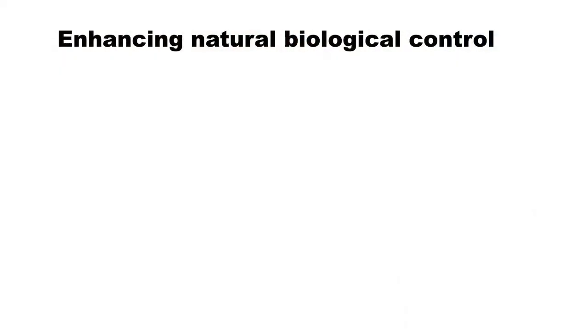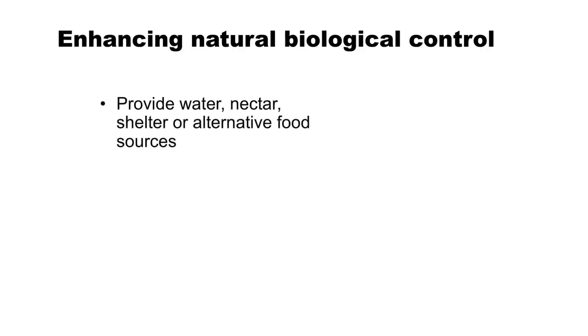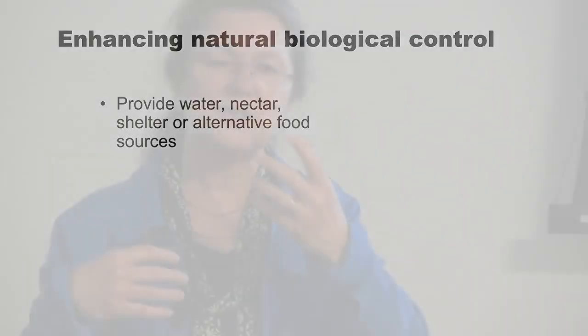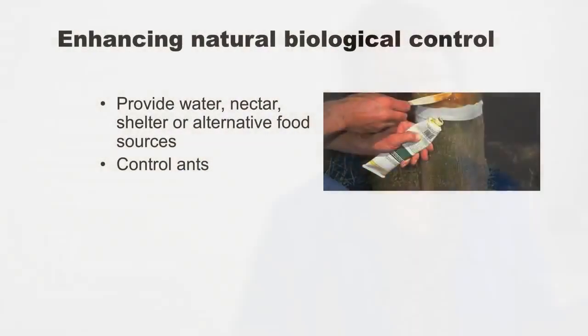In terms of what you do in your garden, you're going to be focusing on enhancing natural biological control. One of the ways of doing that is providing water, nectar, shelter, and alternative food sources. These little parasitic wasps will live longer and lay more eggs if they have water and nectar - most of them don't feed on the insects; they just take in nectar and water as a food source. Controlling ants is also important. As mentioned before, ants protect honeydew-producing insects up in trees and other plants.